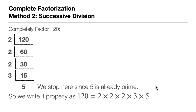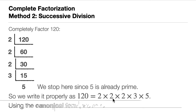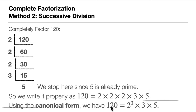All the divisors used are the prime factors of 120: 2 times 2 times 2 times 3 times 5 — the same result as method one. Using the canonical form, we get the same answer: 120 equals 2 cubed times 3 times 5. Either way, both methods end up with the same answer.